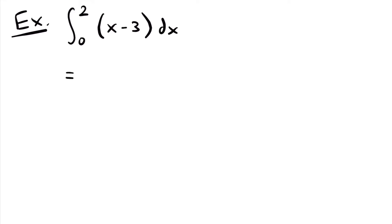We'll have that this is equal to x to the power of 1 plus 1 divided by 1 plus 1, minus 3x. So we use the power rule on x — we added 1 to the exponent of 1, so we have 1 plus 1 divided by that new exponent 1 plus 1. We subtracted 3x because when you integrate a constant, you multiply it by the variable you are integrating with respect to. In this case, we are integrating with respect to x.